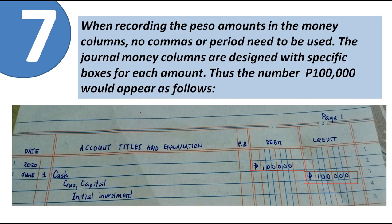When recording peso amounts in the money columns, no commas or periods need to be used. The journal money columns are designed with specific boxes for each digit. So the number 100,000 is written one digit per box, from right to left — 0, 0, 0, 0, 0, 1 — without inserting commas between digits or a period for centavos.